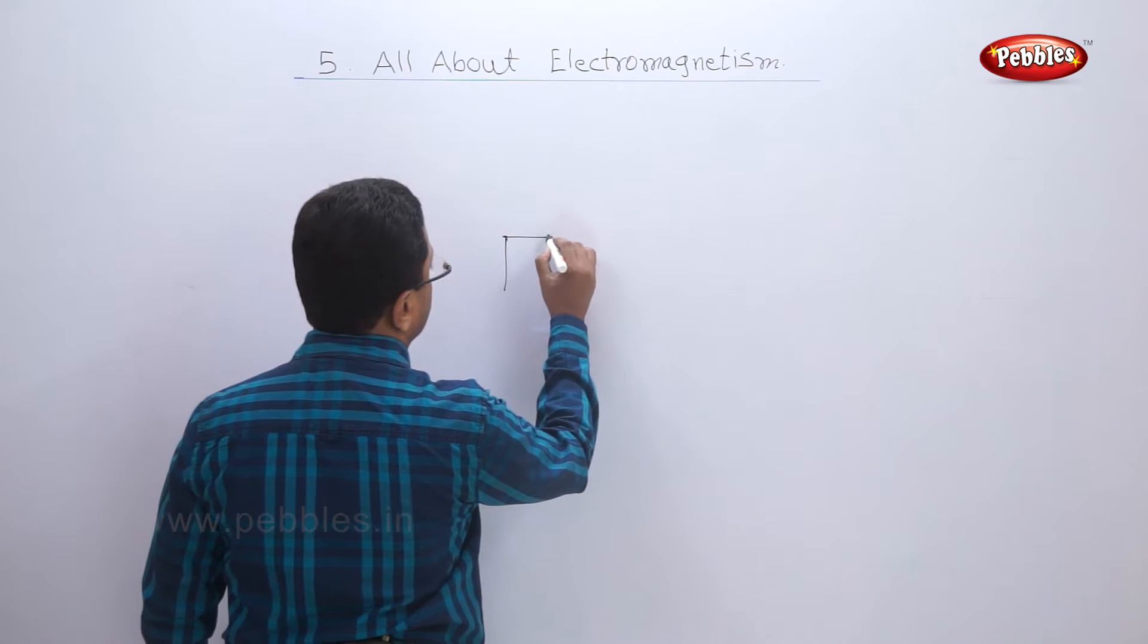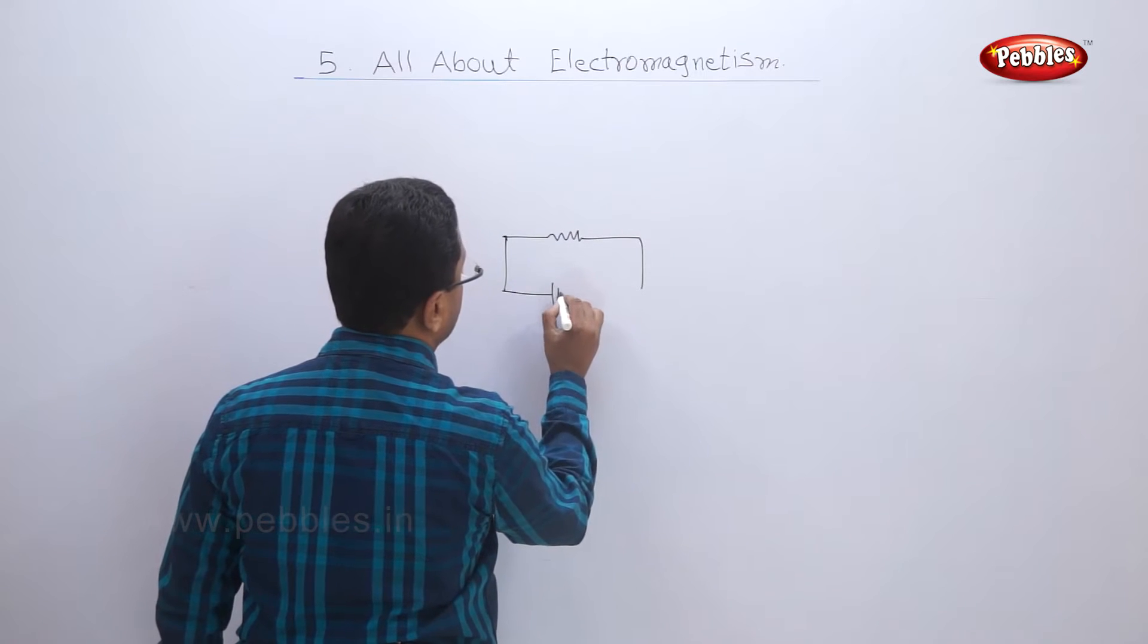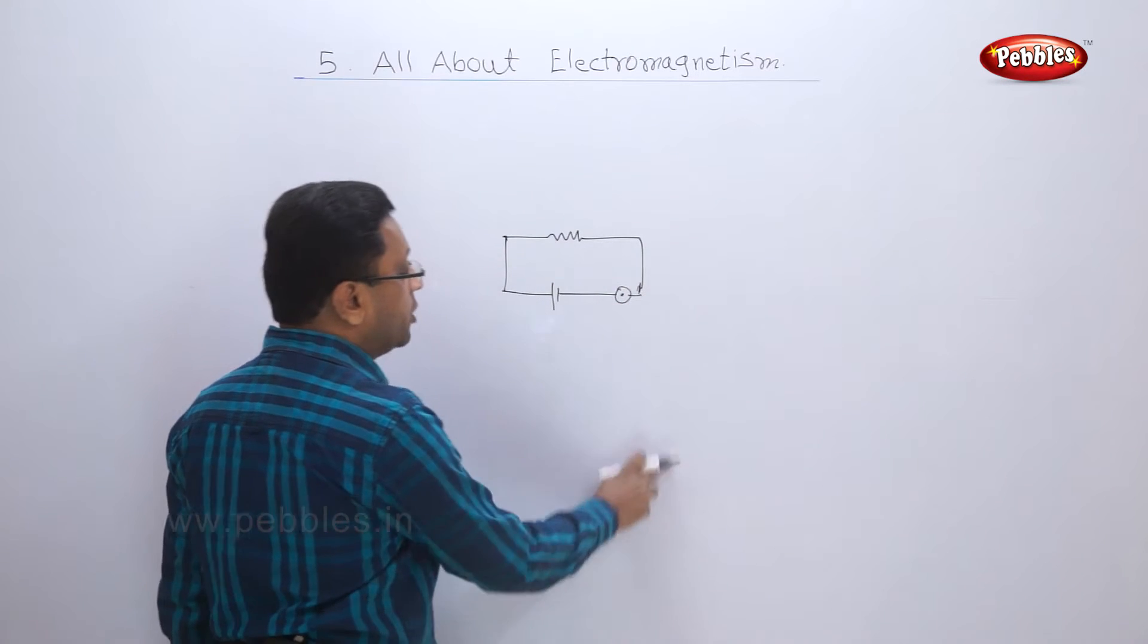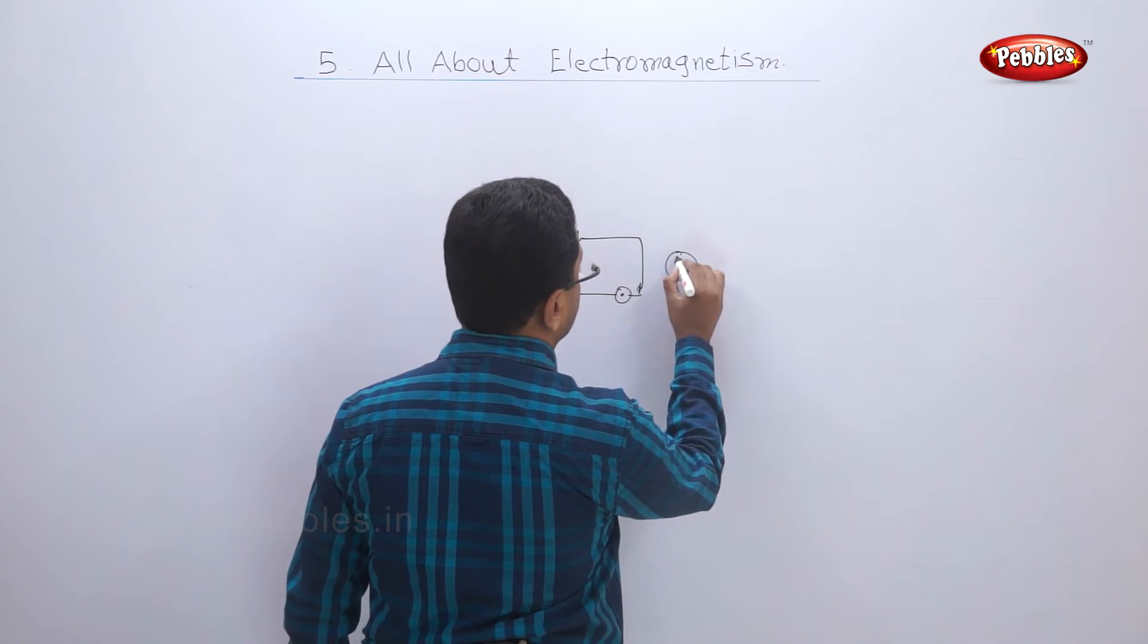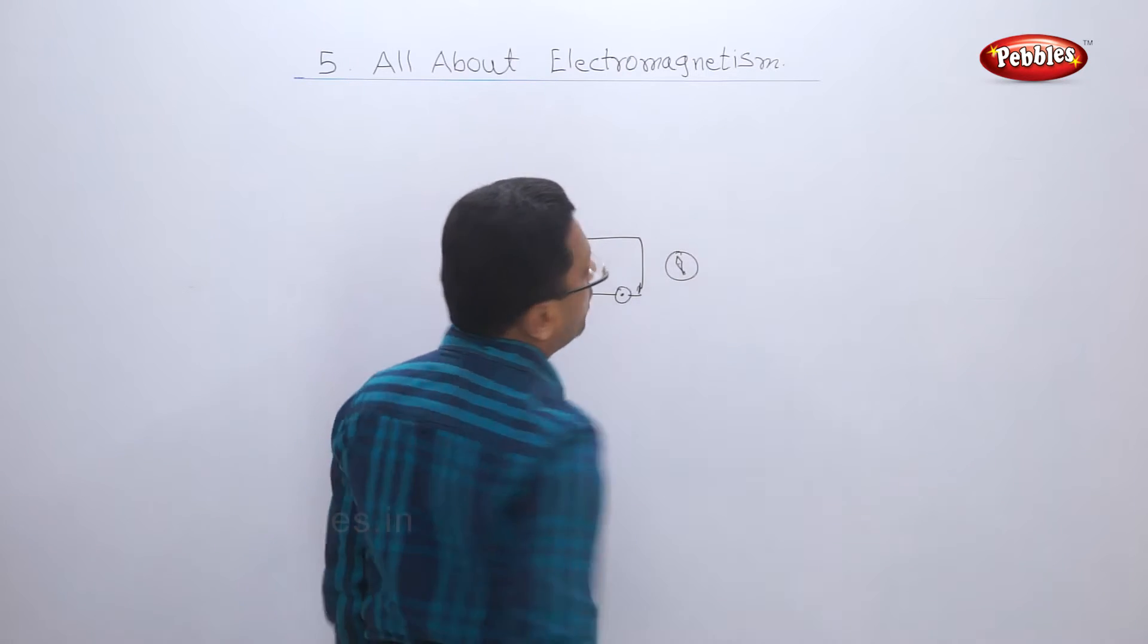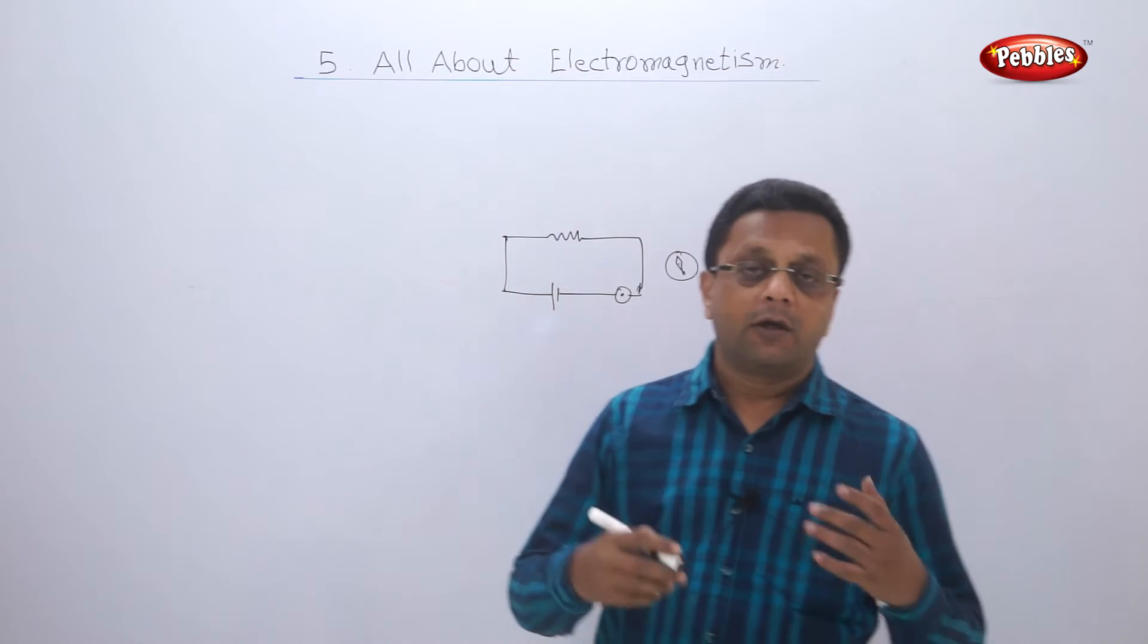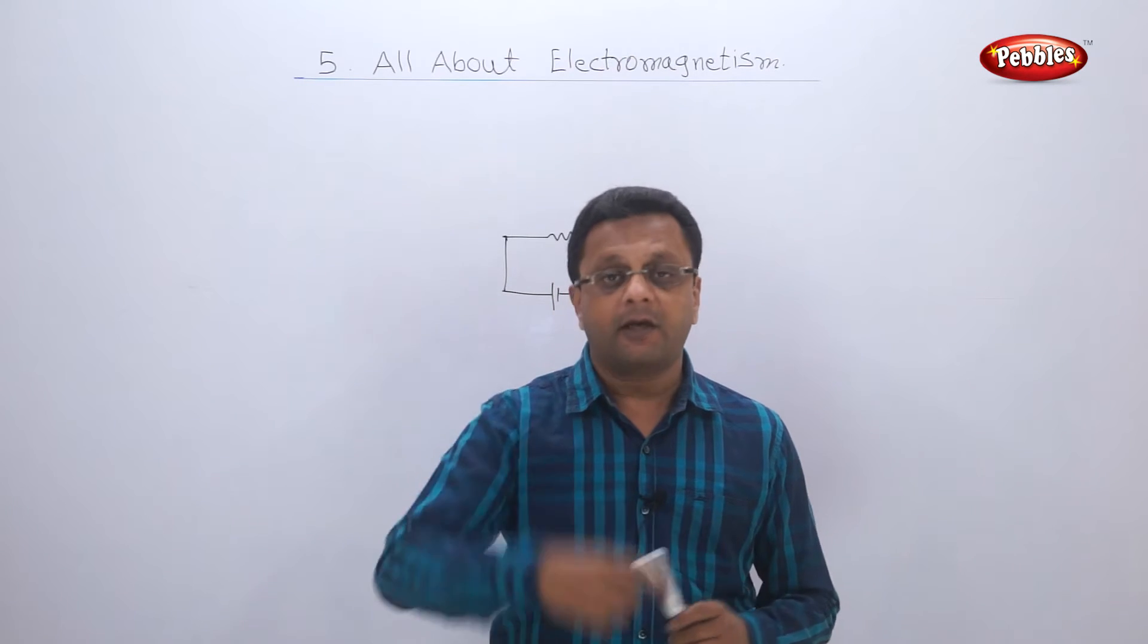Let us see, one electrical circuit is there, and eventually on his table there was a compass. When the compass was kept, actually he was not aware what may happen. This experiment was done unknowingly, that compass was kept there unknowingly.